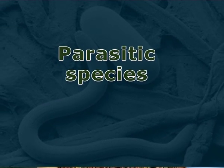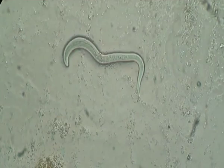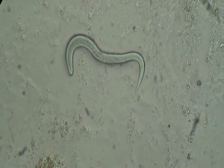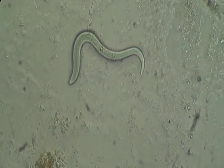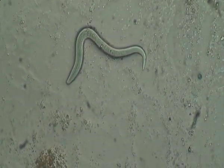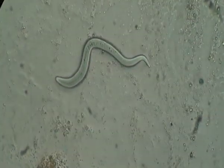Nematodes commonly parasitic on humans include Ascaris, filariae, hookworms, pinworms, and whipworms. The species Trichinella spiralis, commonly known as the trichina worm, occurs in rats, pigs, and humans and is responsible for the disease trichinosis.